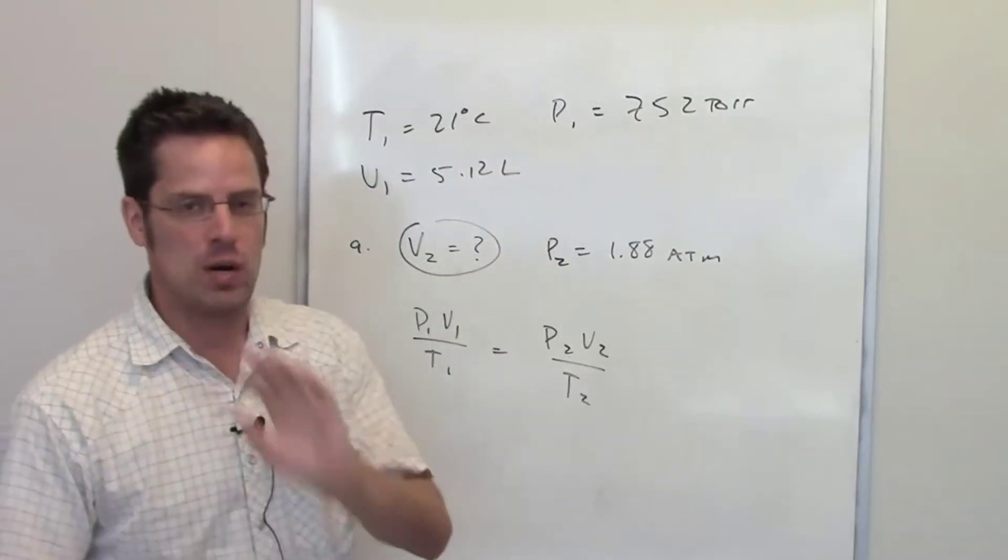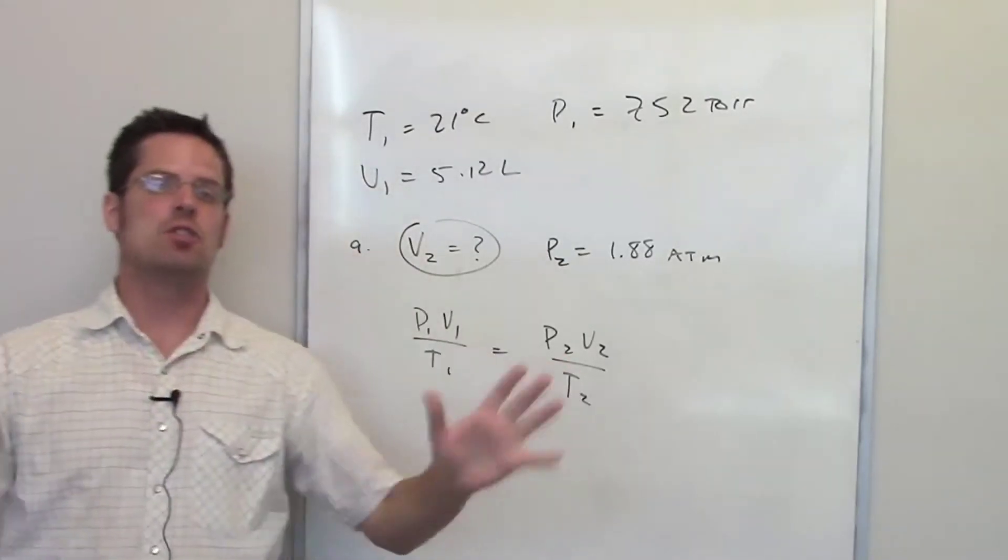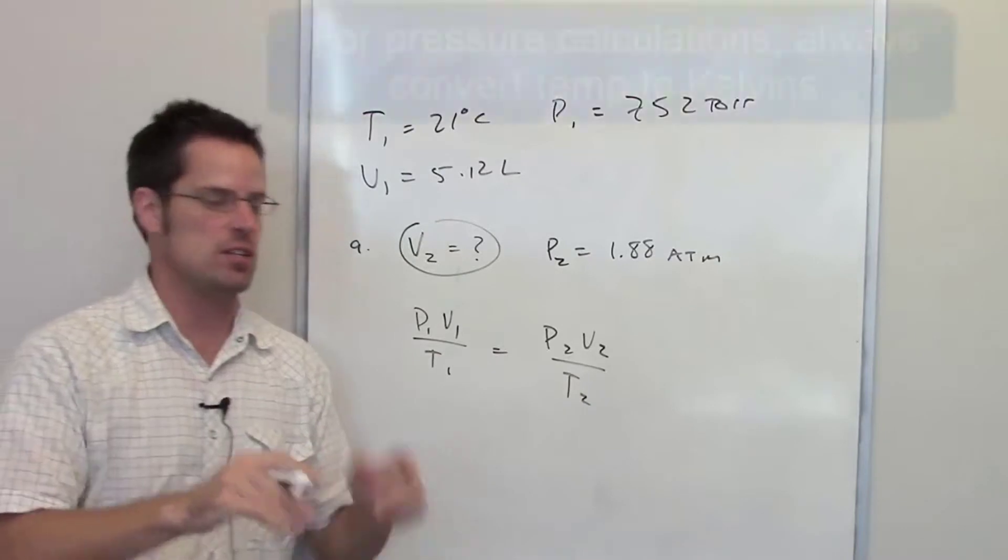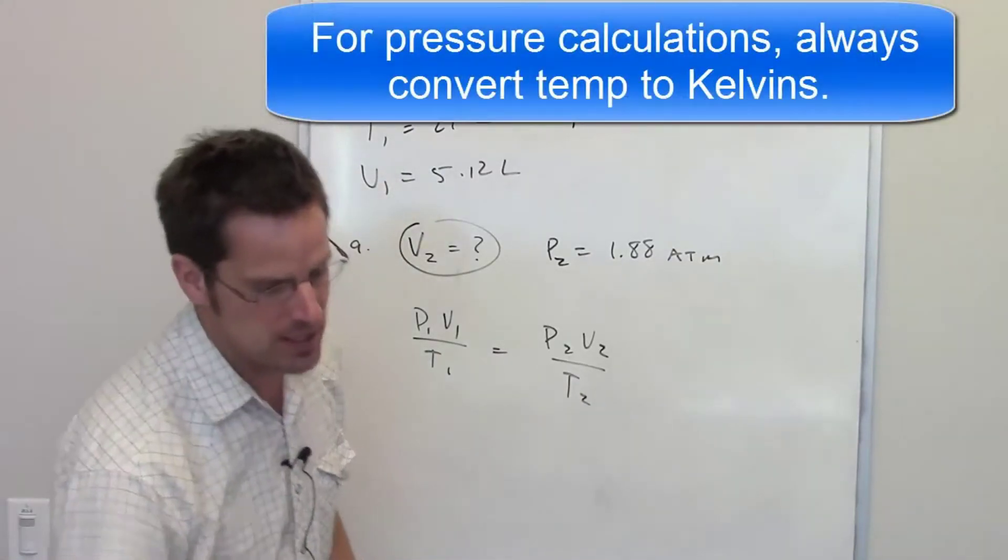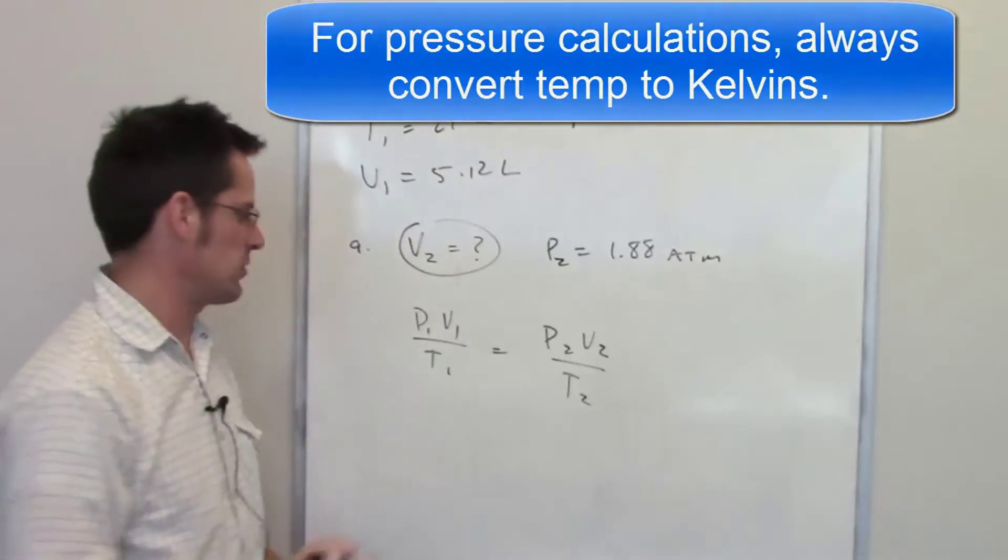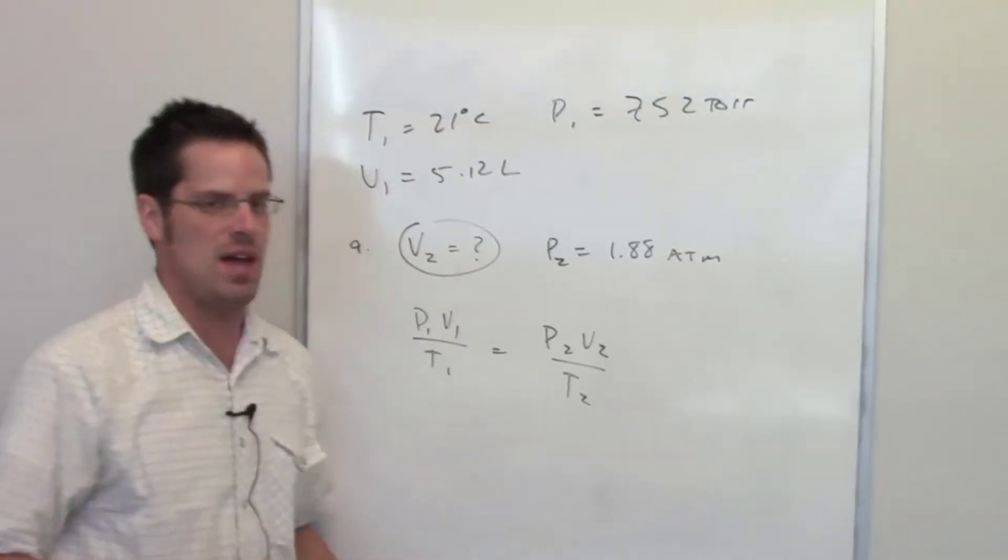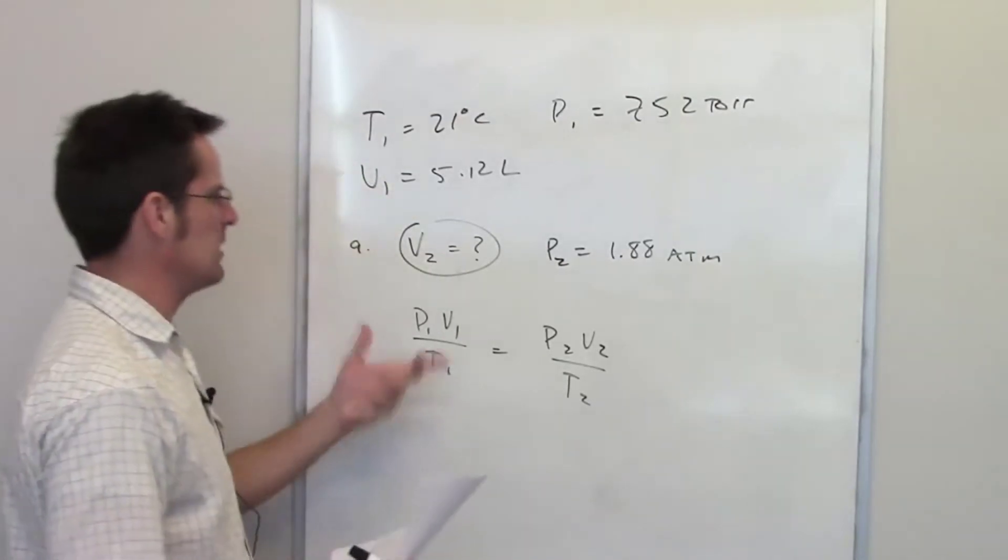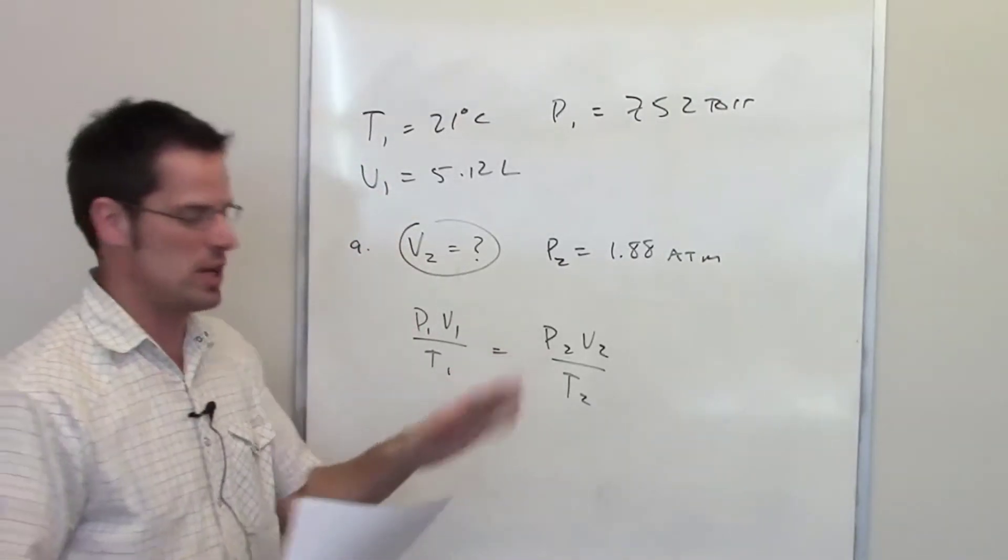So whenever I'm doing a gas calculation, in fact throughout this entire chapter, chapter 10, I always convert temperature to Kelvins. And the reason is because you can't deal with temperatures that have zero degrees Celsius when you throw that in the denominator of a fraction, it's just going to mess you up. And negatives can also screw things up.